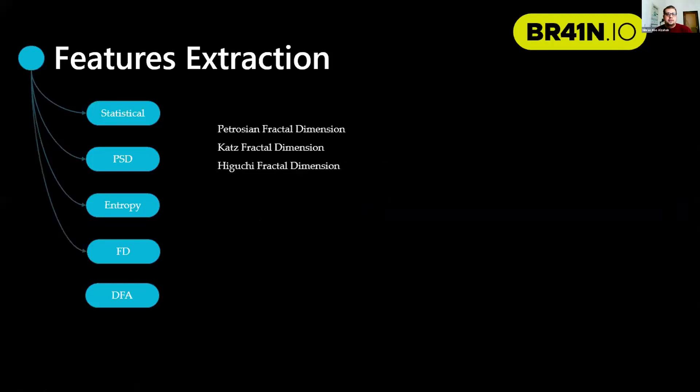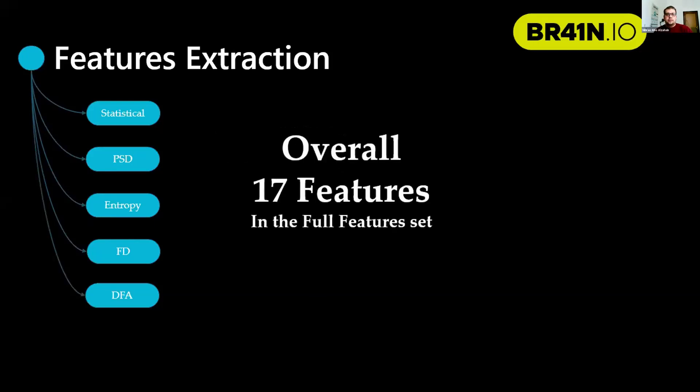After that, fractal dimension using Petrosian's fractal dimension, Katz, and Higuchi. Finally, we use detrended fluctuation analysis. Overall, we got 17 features. Because our data includes eight channels, we take the average of each channel to eliminate the role of the channels and to reduce the dimensionality of the system, which will increase the calculation speed.